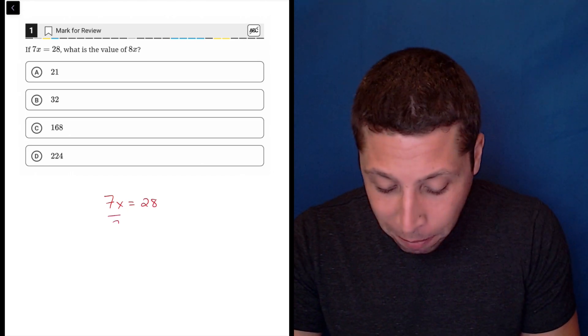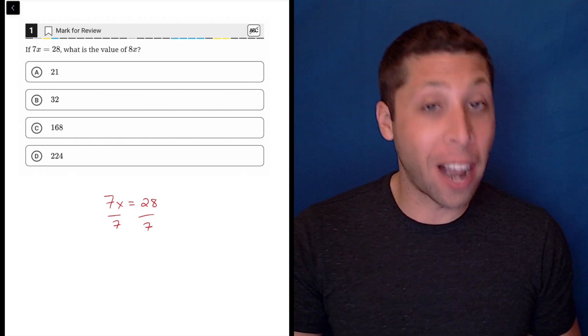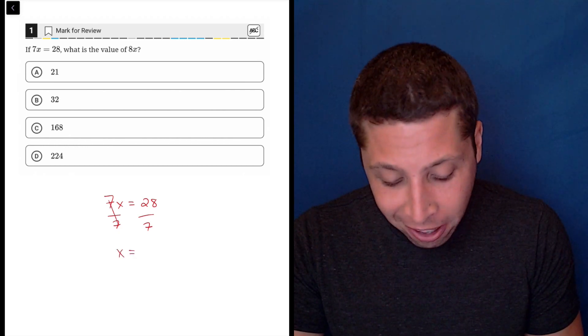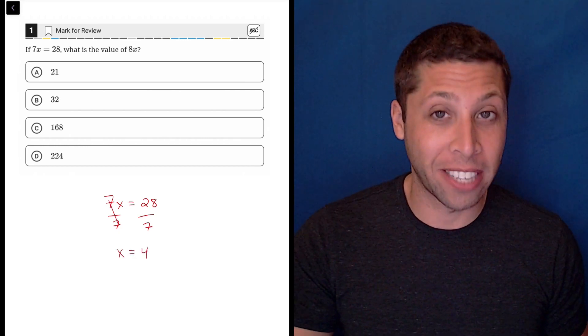I would still recommend showing the work of dividing by 7, crossing it out. Now we got 28 divided by 7 is 4.